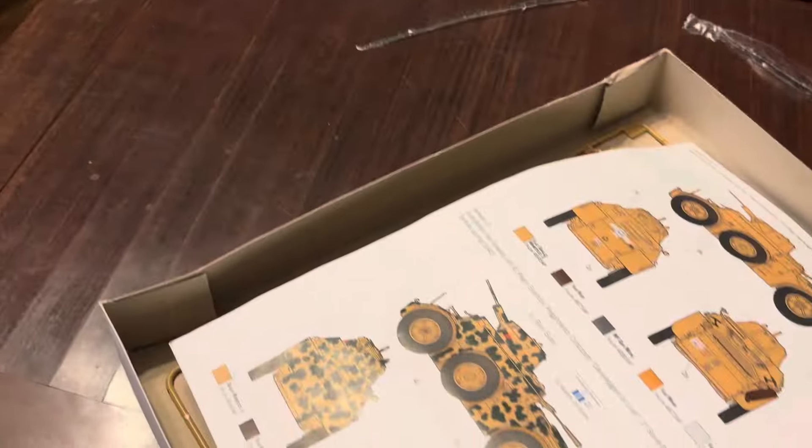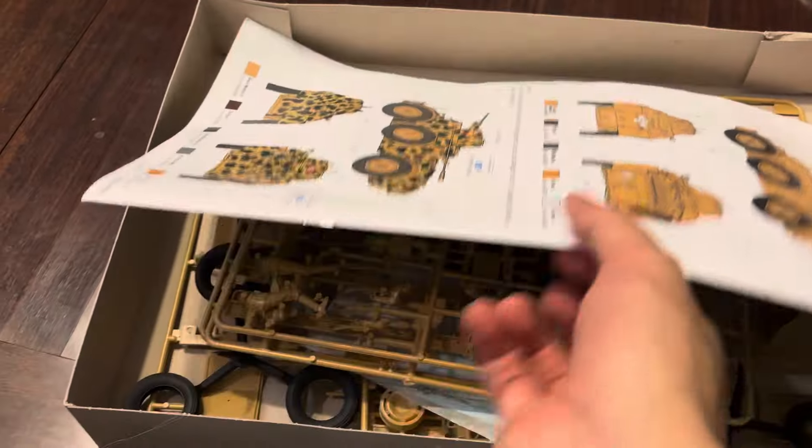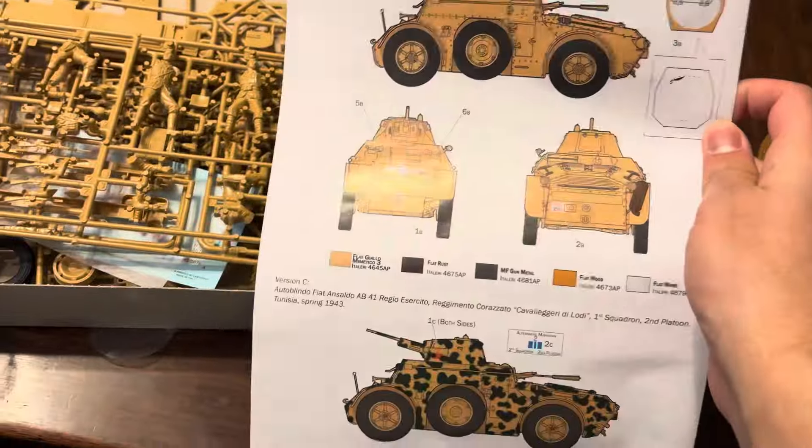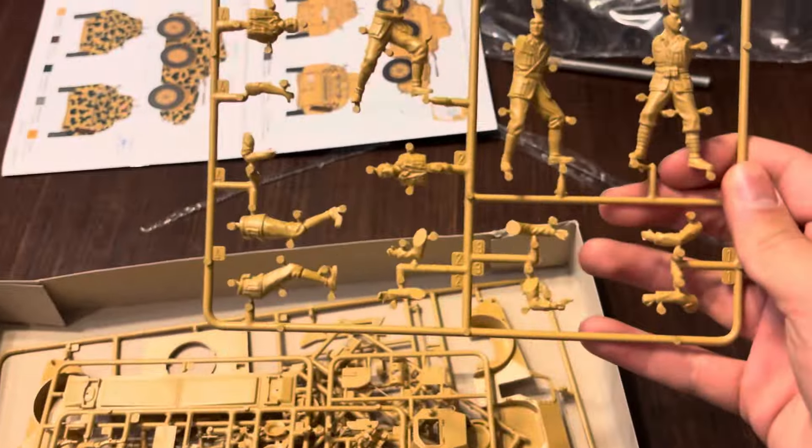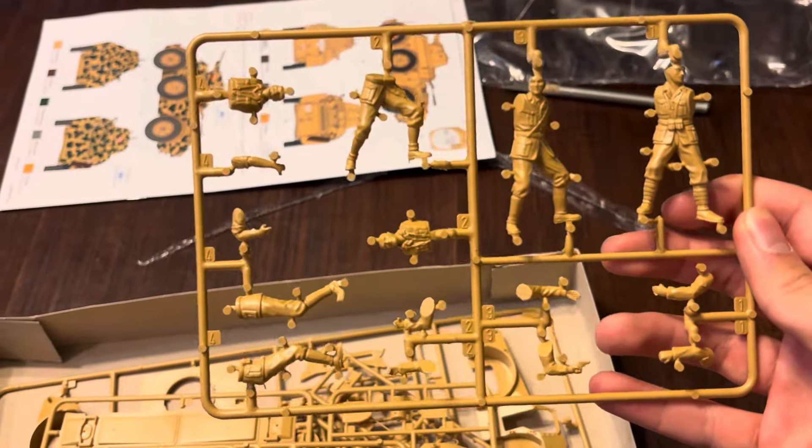Here is the instruction manual. This kit is in one thirty-fifth scale, I forgot to mention that. First tree we have here has people on it.